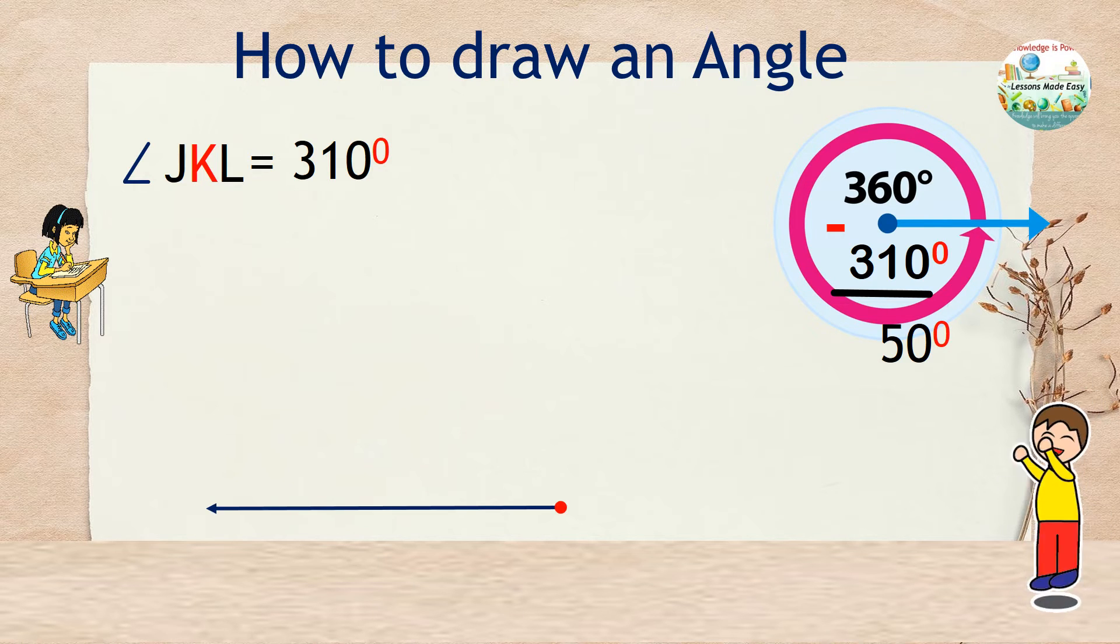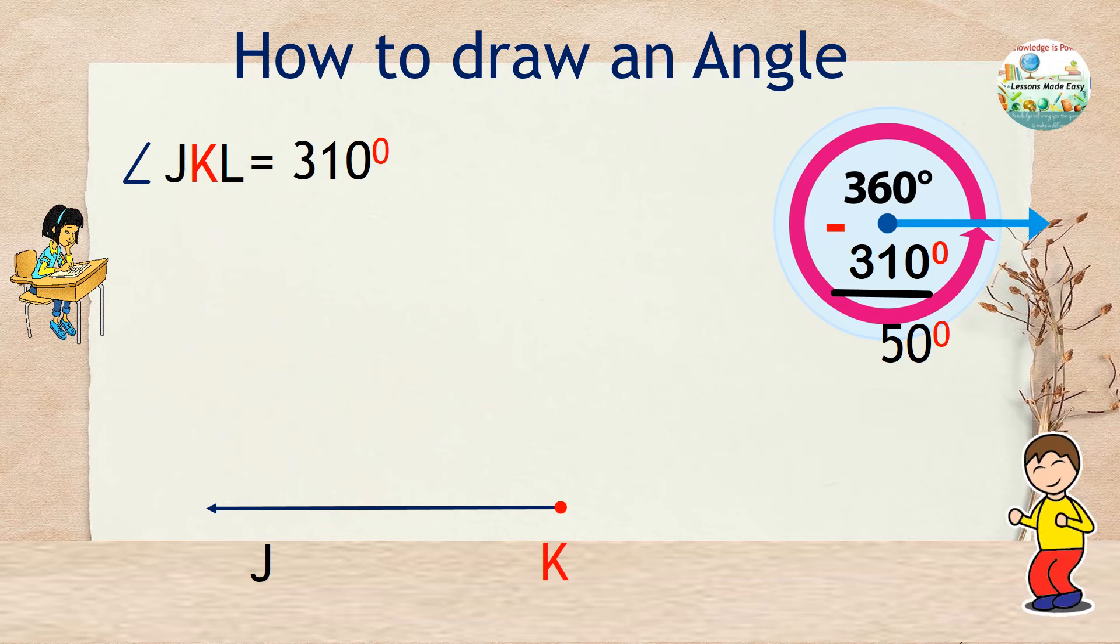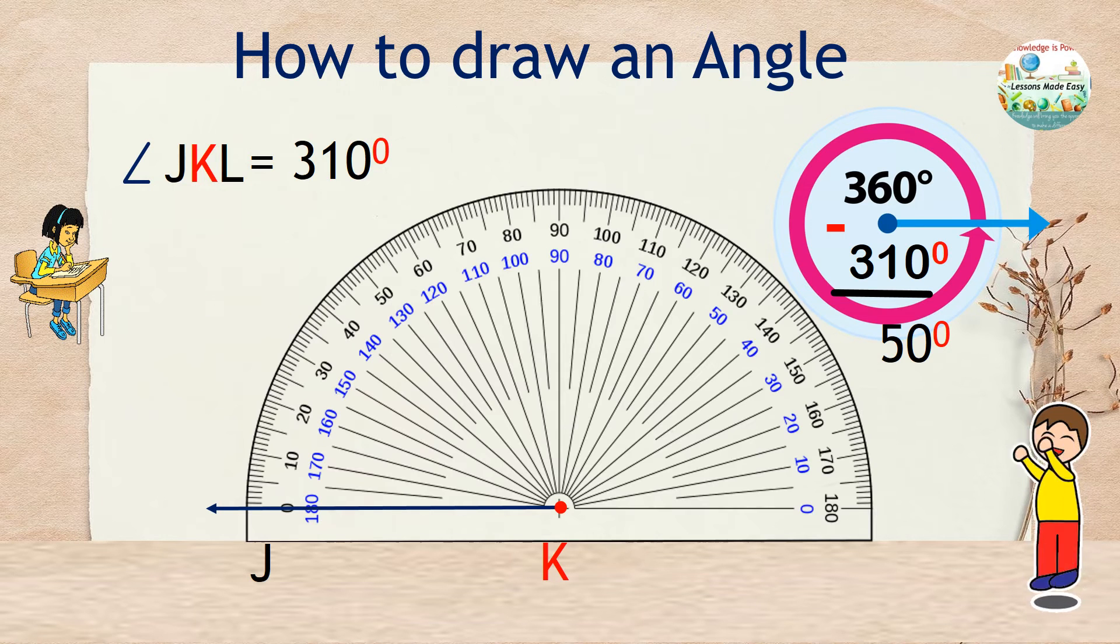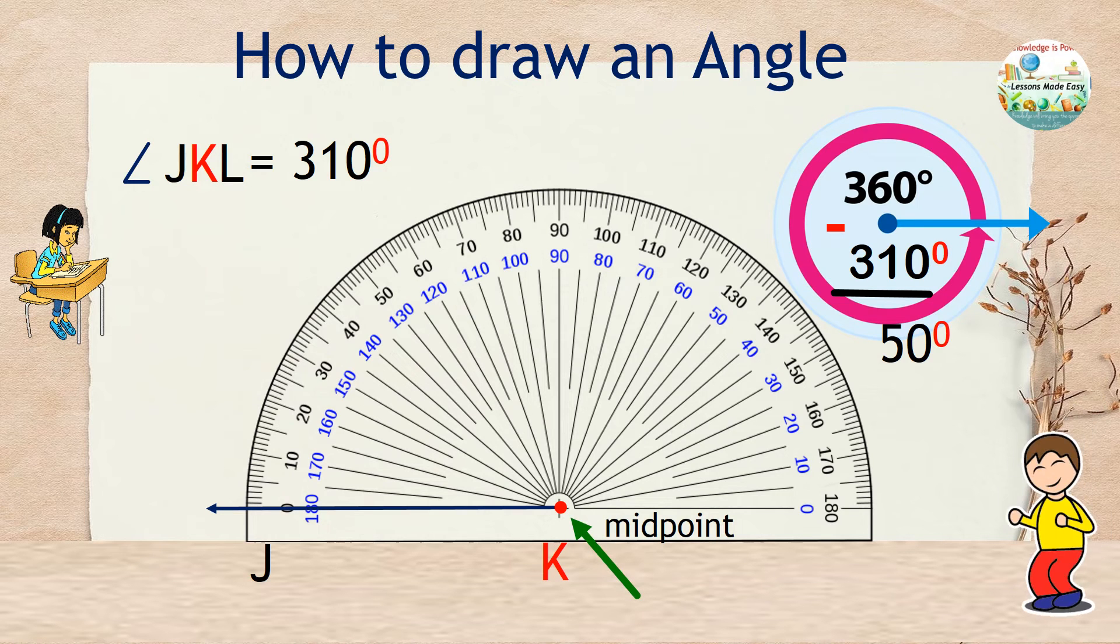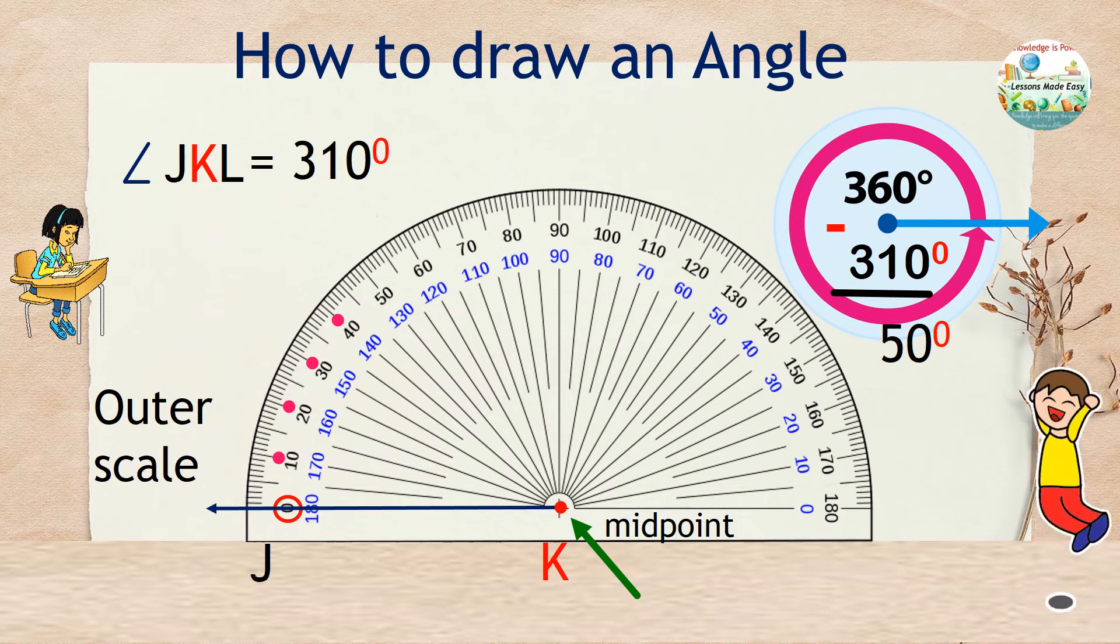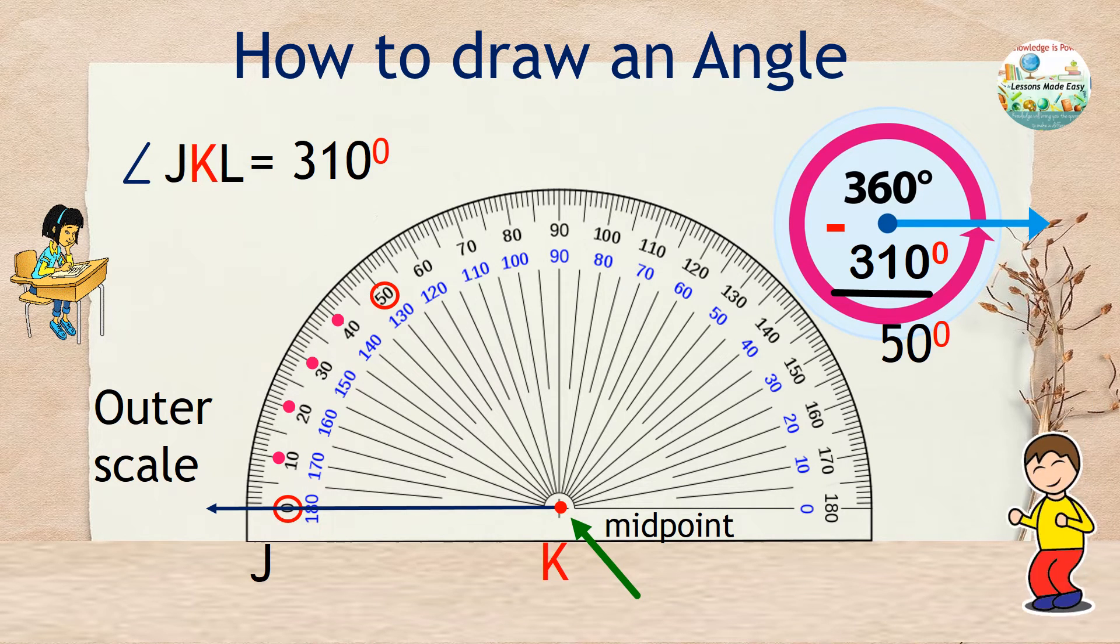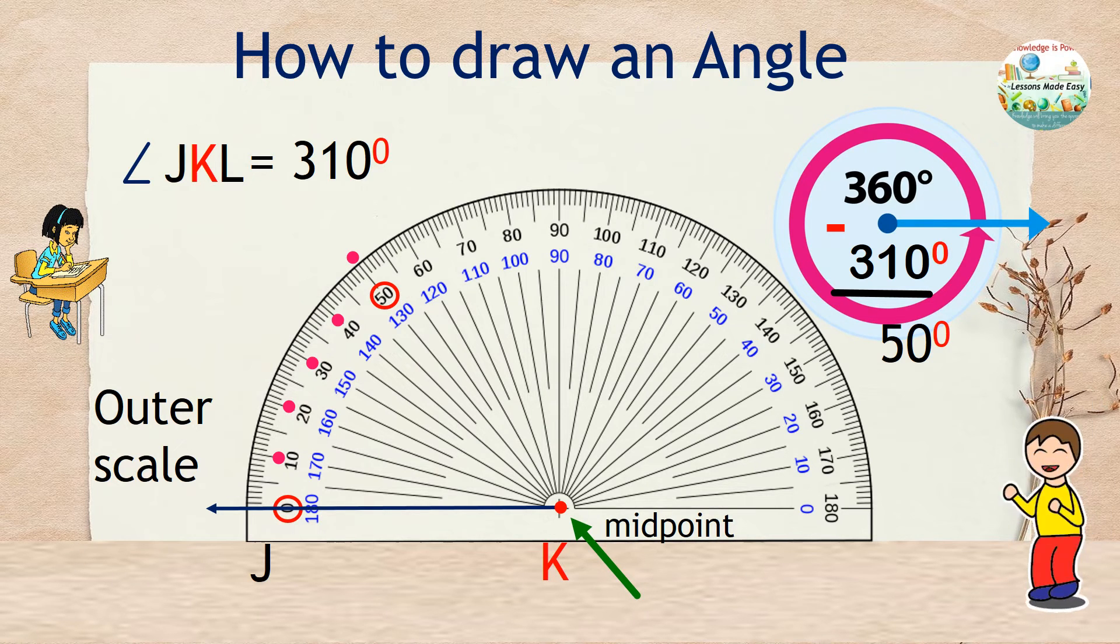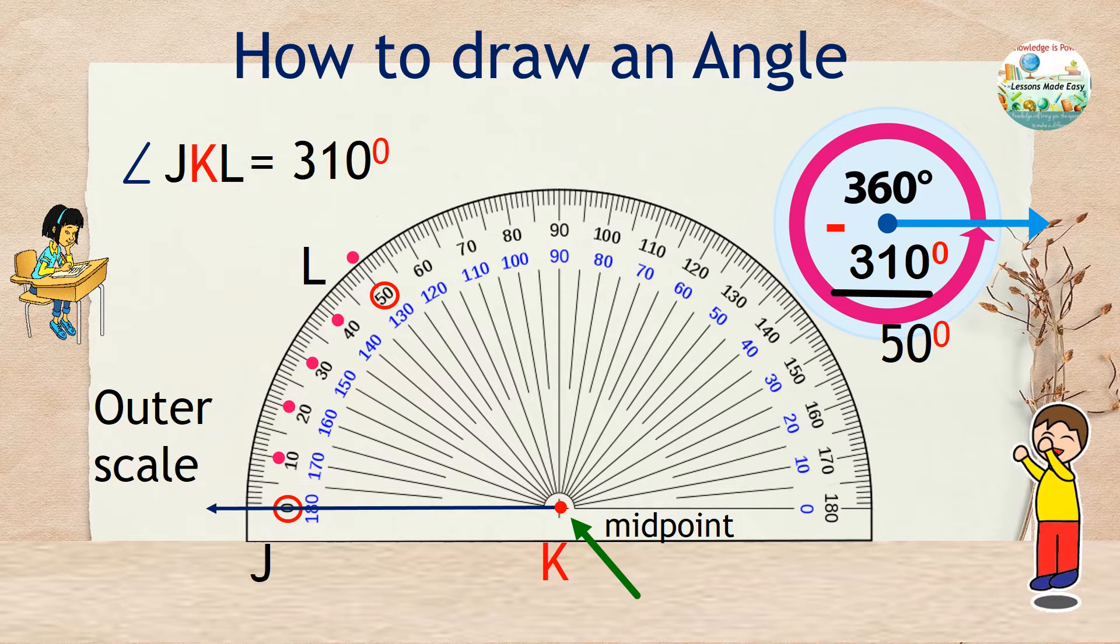Start with a ray and name the endpoint K and the other maybe J. Grab your protractor and make sure the midpoint is directly over the vertex. Use the outer scale in black and locate 0 degrees and continue until you get 50 degrees. So now we have our desired number. Mark a point on the edge of the protractor that corresponds to 50 degrees and then name this point L. This time you can remove your protractor.